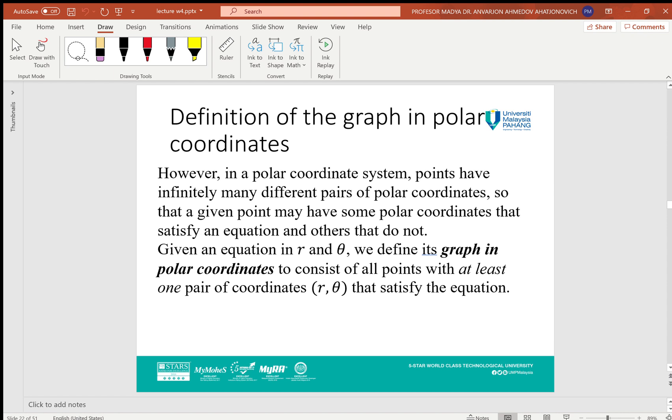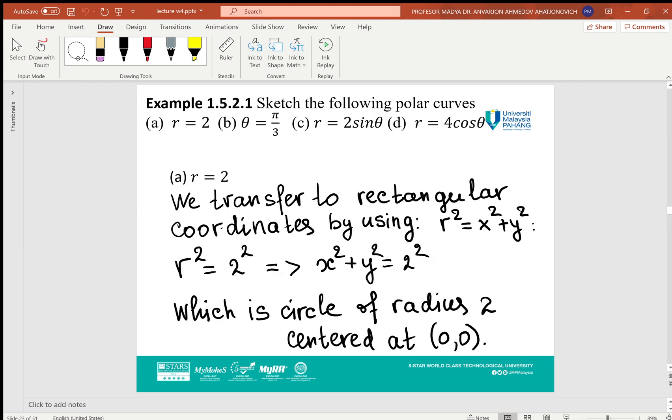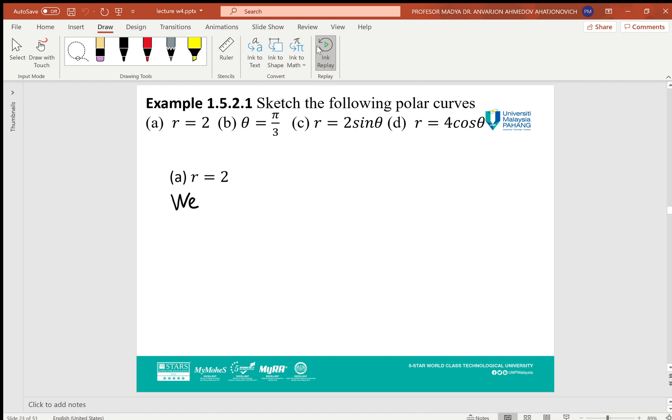Example: Sketch the following polar curves: (a) r = 2, (b) θ = π/3, (c) r = 2sinθ, (d) r = 2cosθ. Let's start from r = 2. First, to easily visualize, we can transfer this to rectangular coordinates.